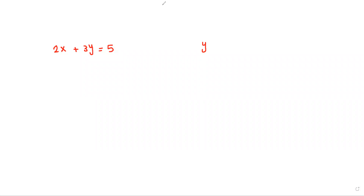Change the subject. We have 2x plus 3y equals 5. We want to make y the subject. The first step: minus 2x on both sides. Cancel them out, so 3y equals 5 minus 2x.